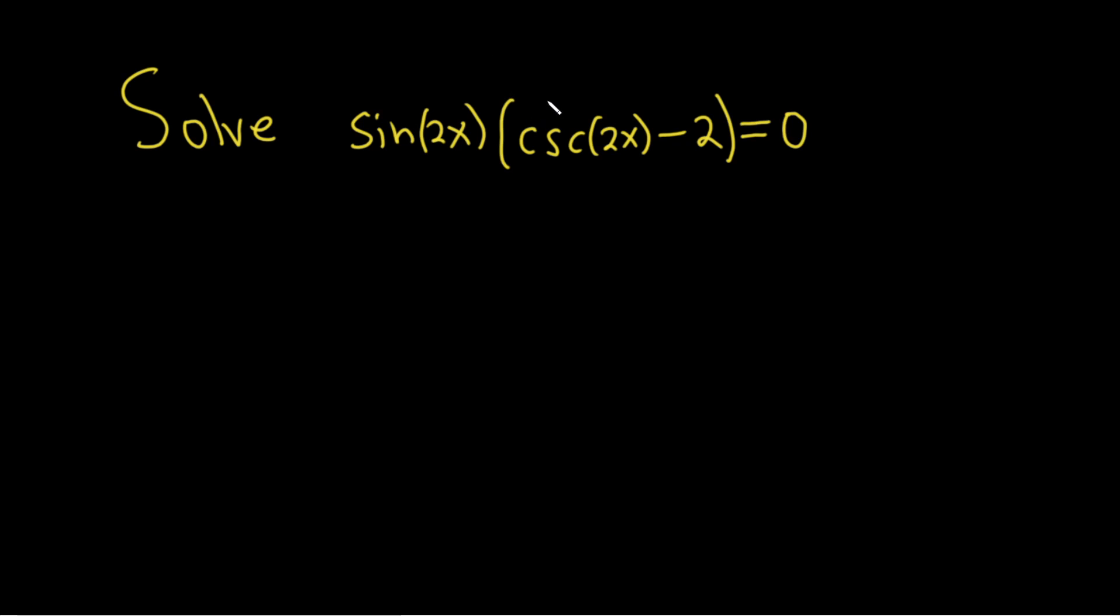This is an interesting equation because cosecant of 2x is really the same thing as 1 over sine of 2x. You can think of it this way, and then you have the sine 2x right here, and then this is equal to 0.